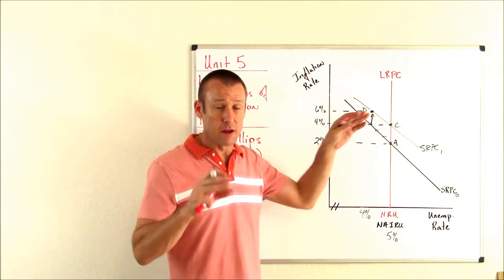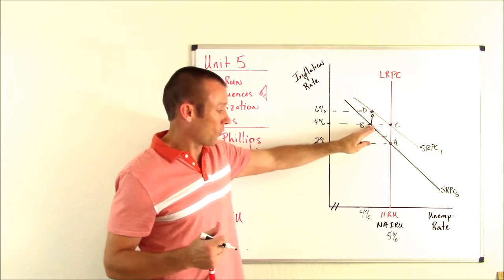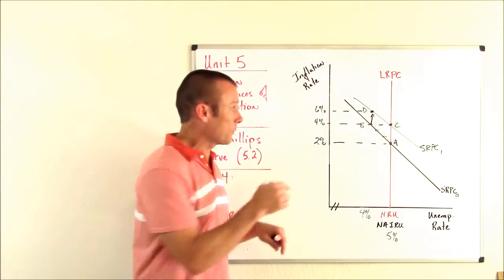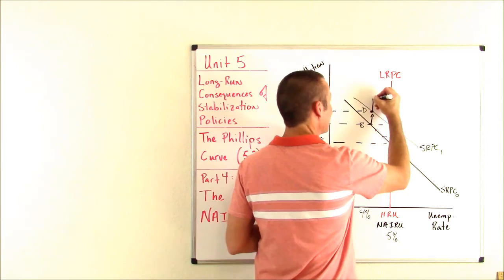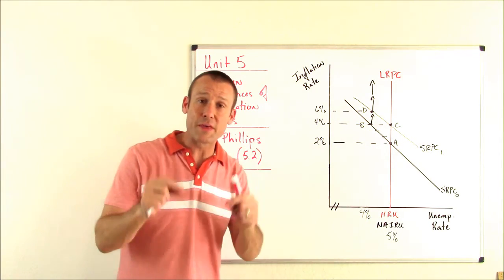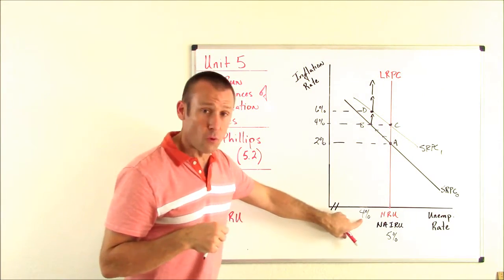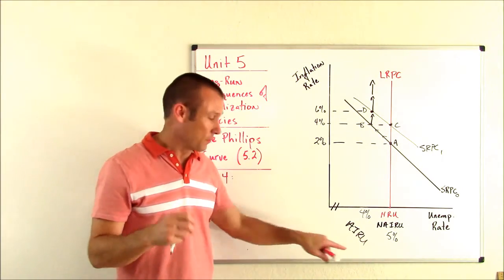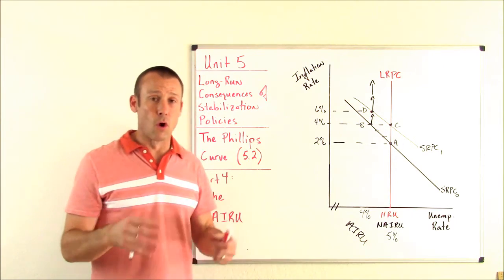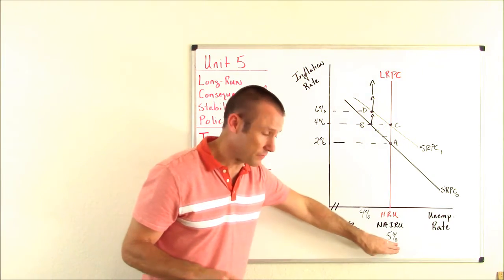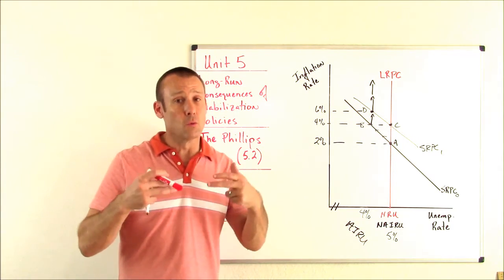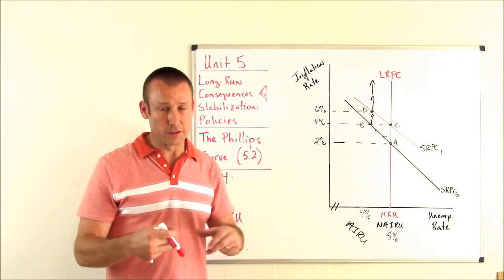If the Fed just keeps trying to hold unemployment at 4% — reacting any time it ticks up — the inflation rate will begin to accelerate upward. We cannot stay at 4% unemployment without inflation accelerating. In fact, 4% would be an AIRU — an accelerating inflation rate of unemployment, where the inflation rate accelerates at that unemployment rate. Hopefully the Fed realizes they were wrong: it's not 4%, it's 5%. That is the lowest unemployment can be without upward pressure on wages or an accelerating inflation rate.